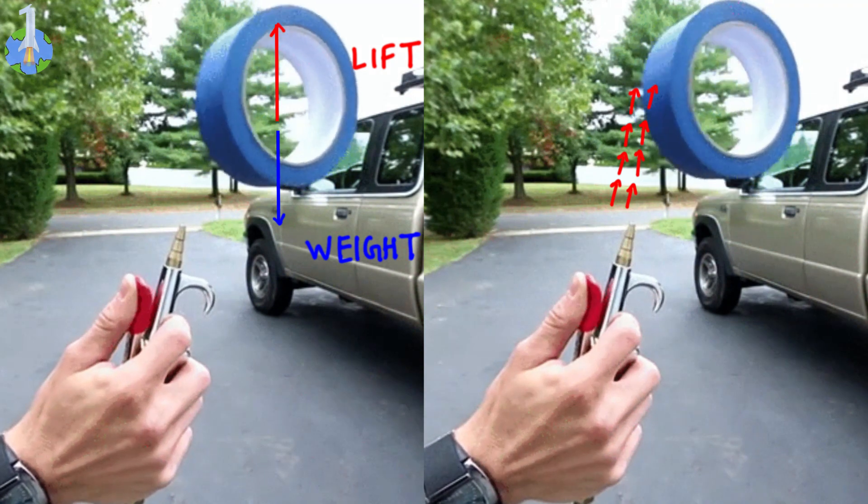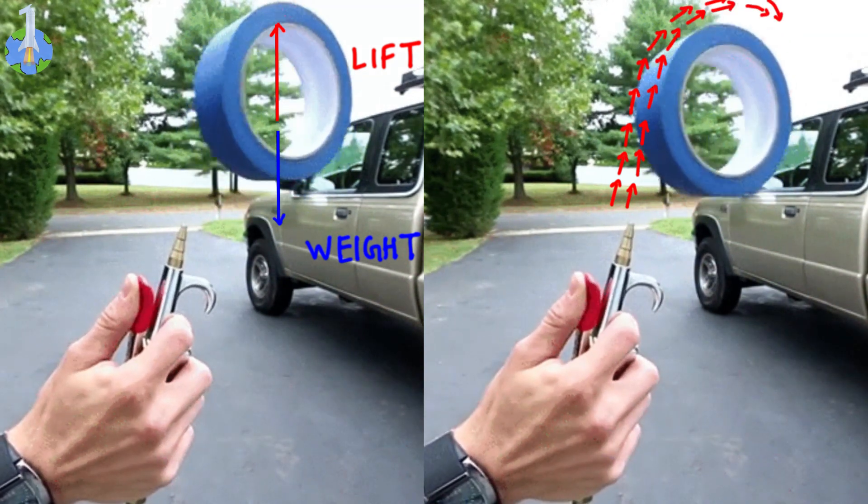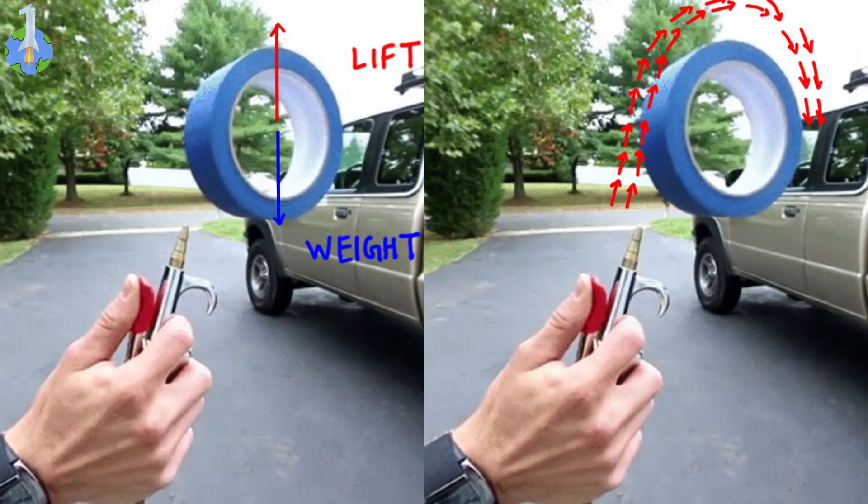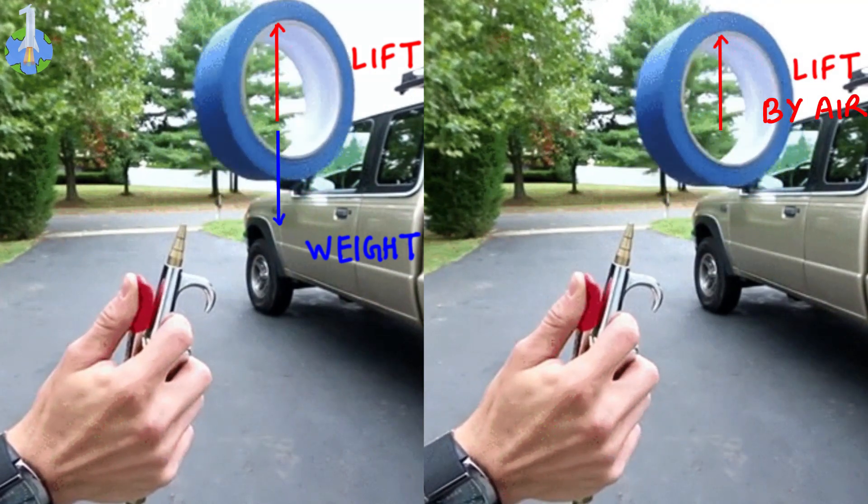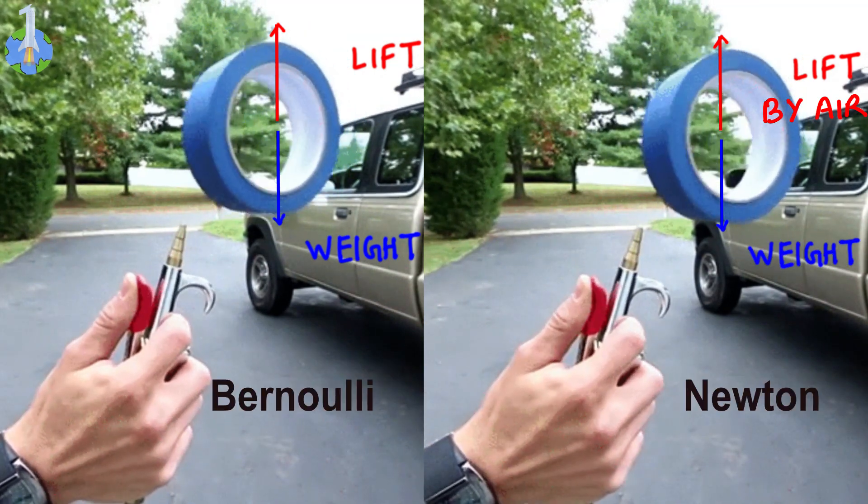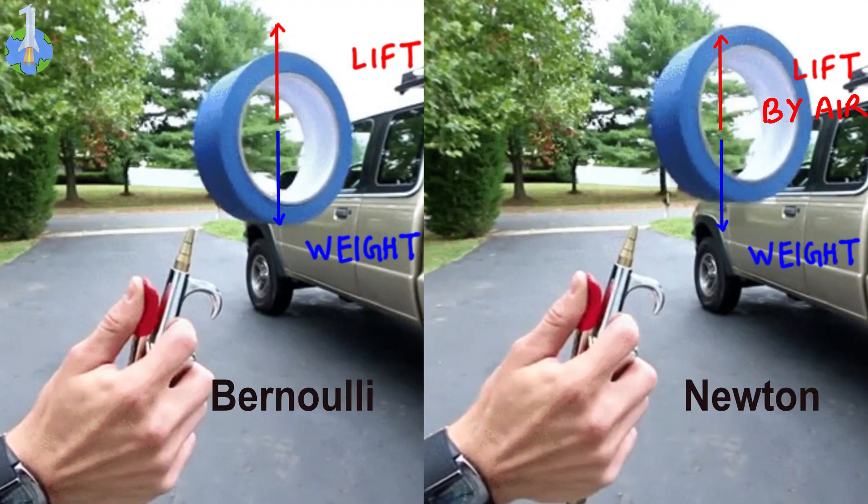Here air coming from the air gun after making its contact with the tape is going down. Tape is exerting net downward force on the air, so air is exerting force in the upper direction that balances the weight of the tape. Bernoulli and Newton's explanation gives the same outcomes.